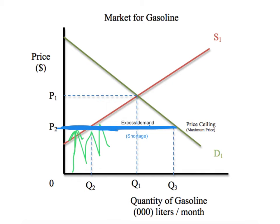These shortages may lead to the emergence of a black market — an illegal market where the product, in this case gasoline, is sold at a higher price somewhere between the maximum price and the equilibrium price. The excess demand might also create lines and queues, and producers start deciding who gets the gasoline. It totally subverts the beauty of the free market, where suppliers and demanders meet at a natural equilibrium point.